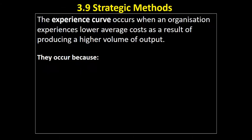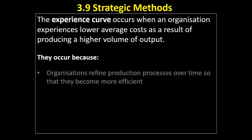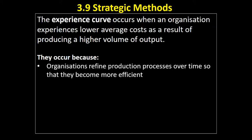So why might that occur? First, the organization refines its production process the more units of output it produces, becoming more efficient. The more units they produce, the more opportunities they have to spot and identify problems and iron out any issues in the production process.